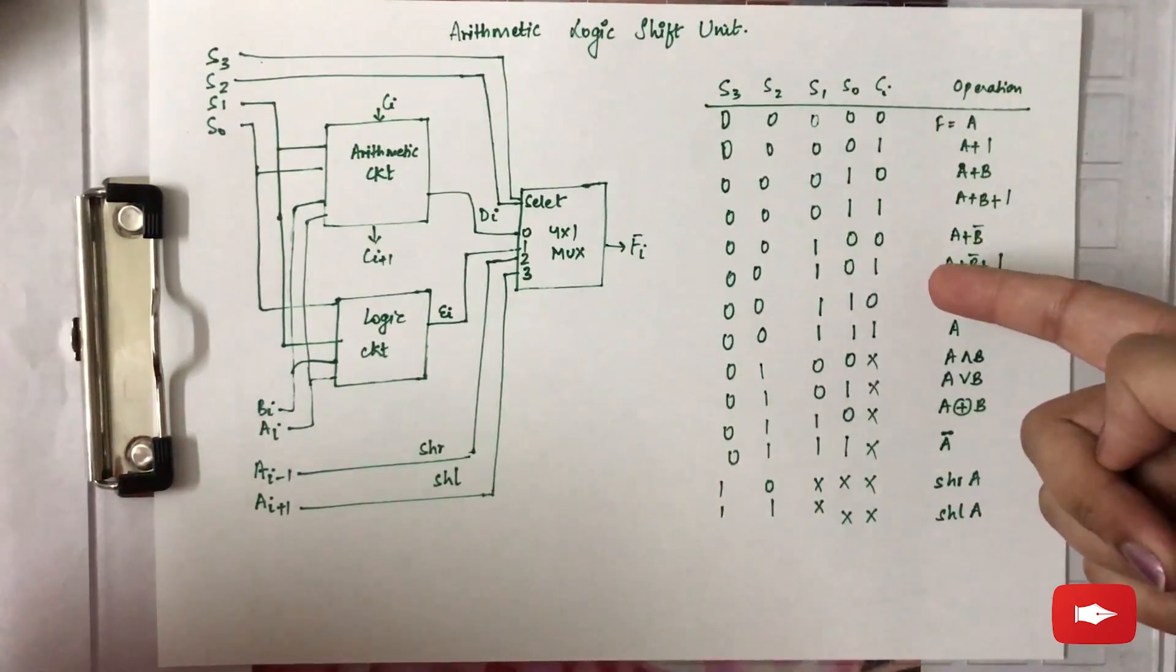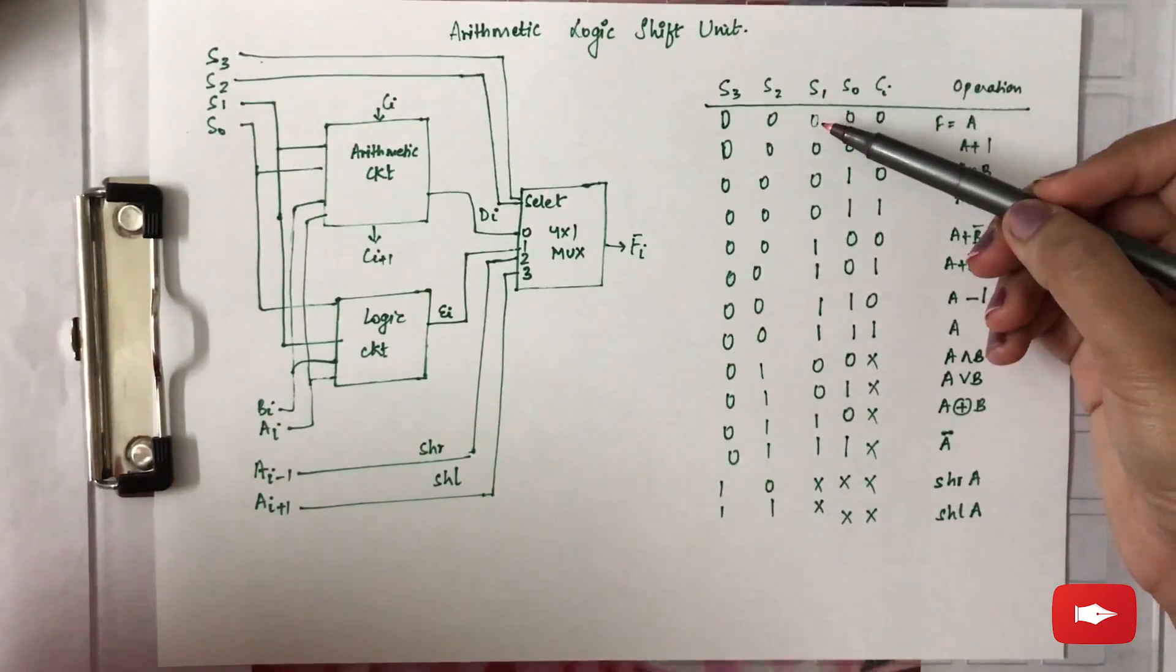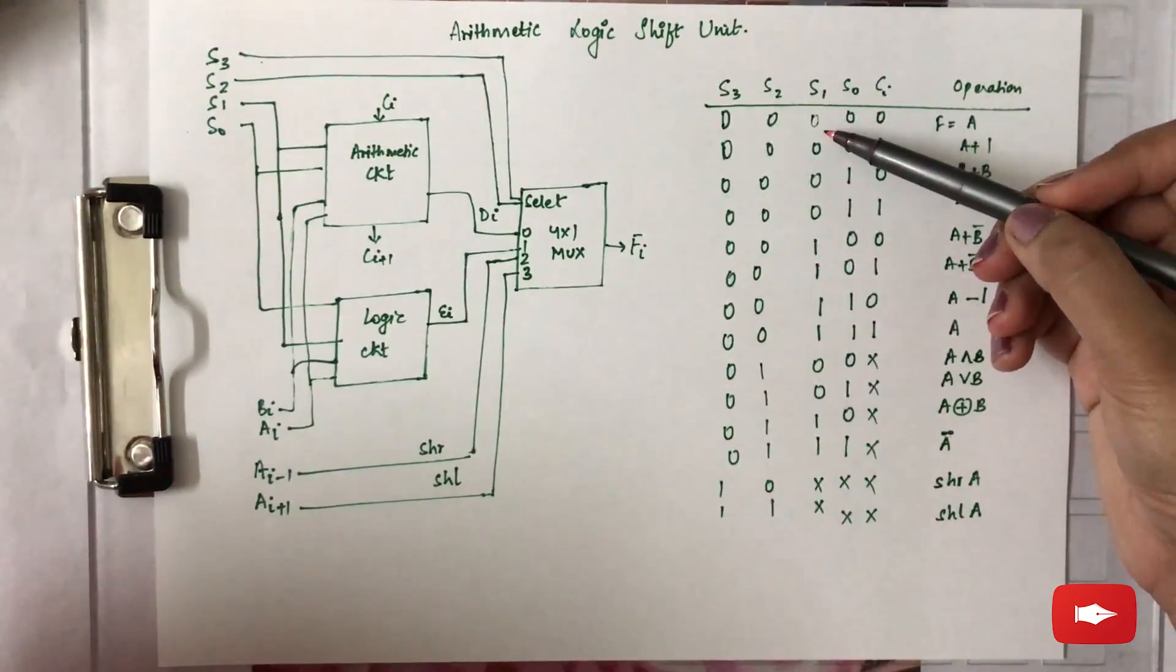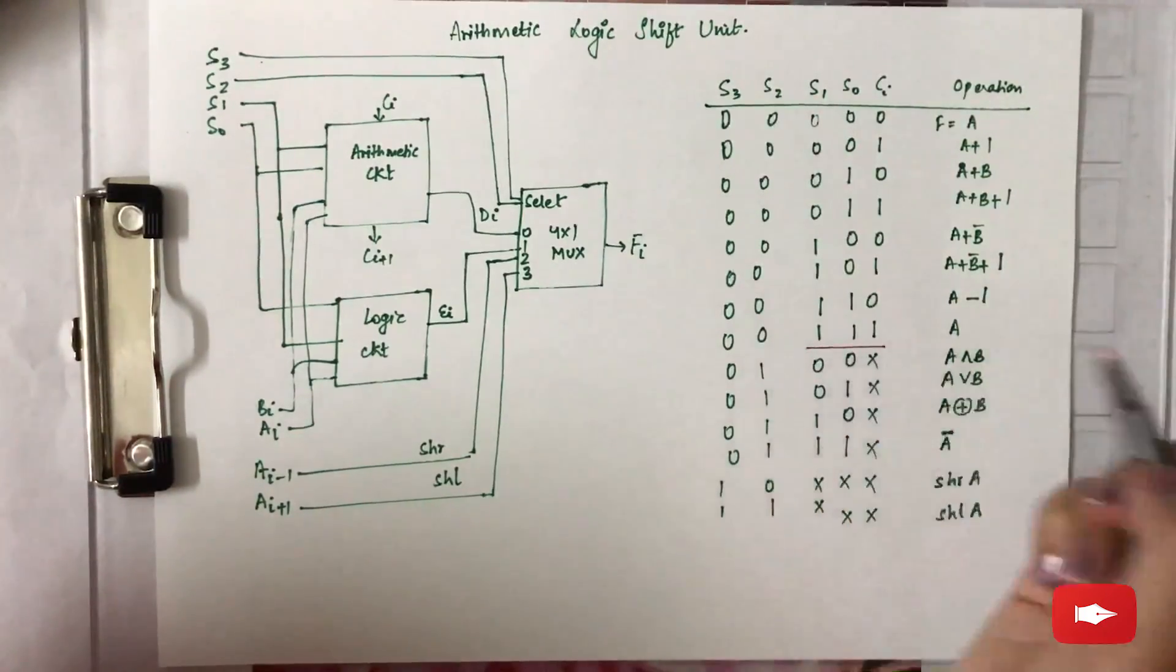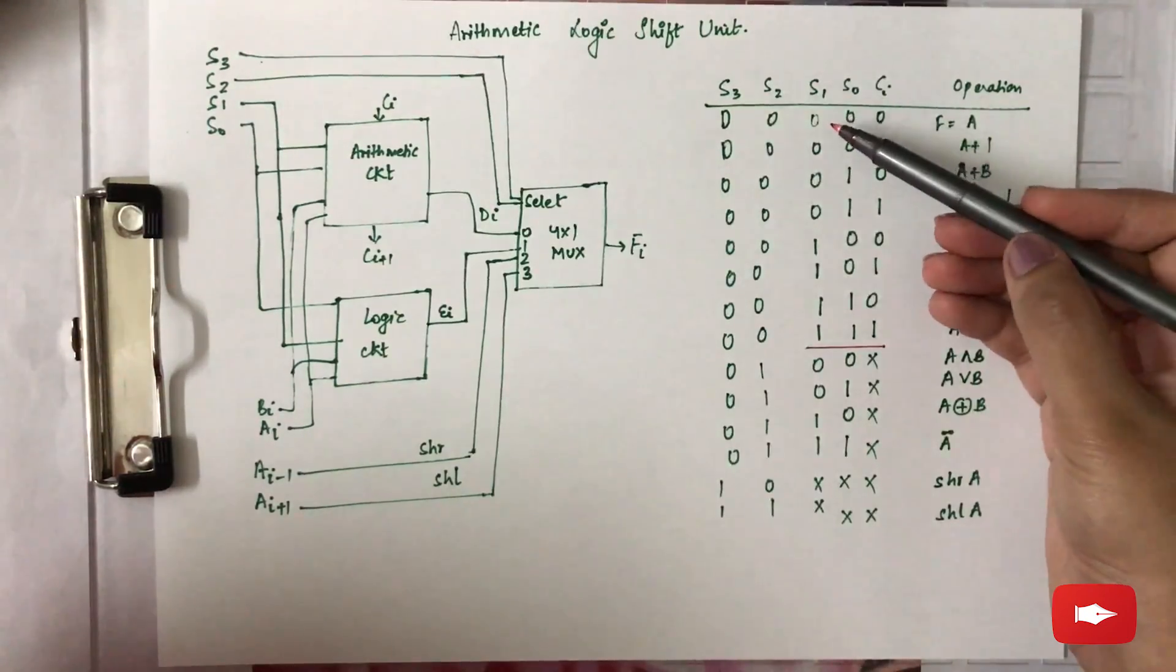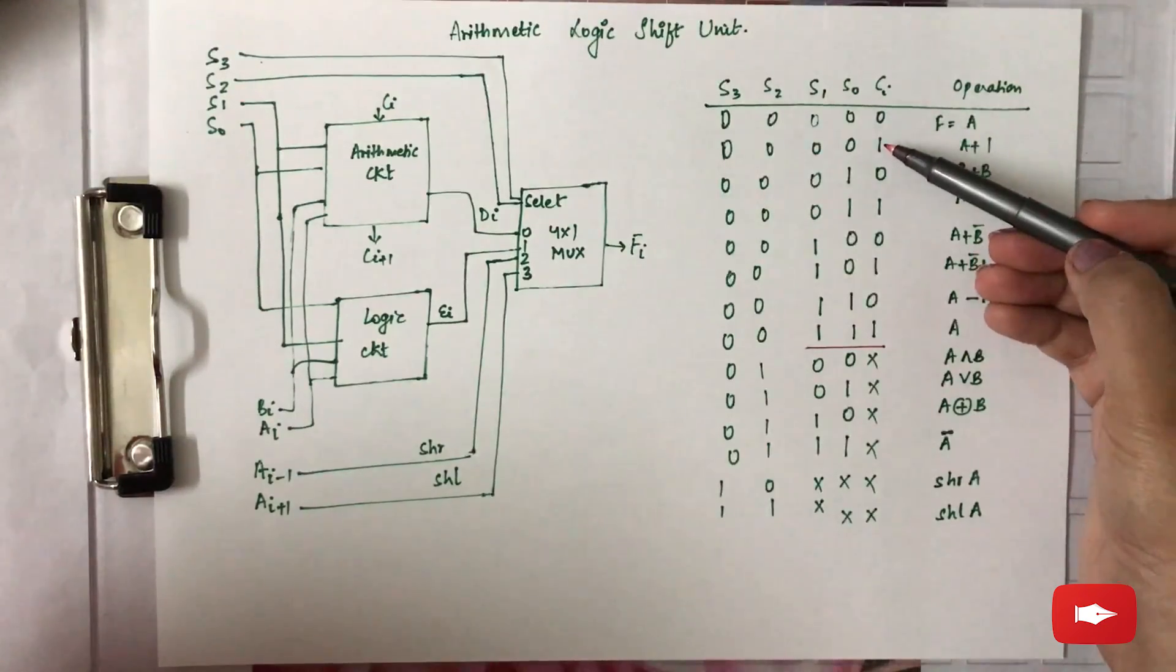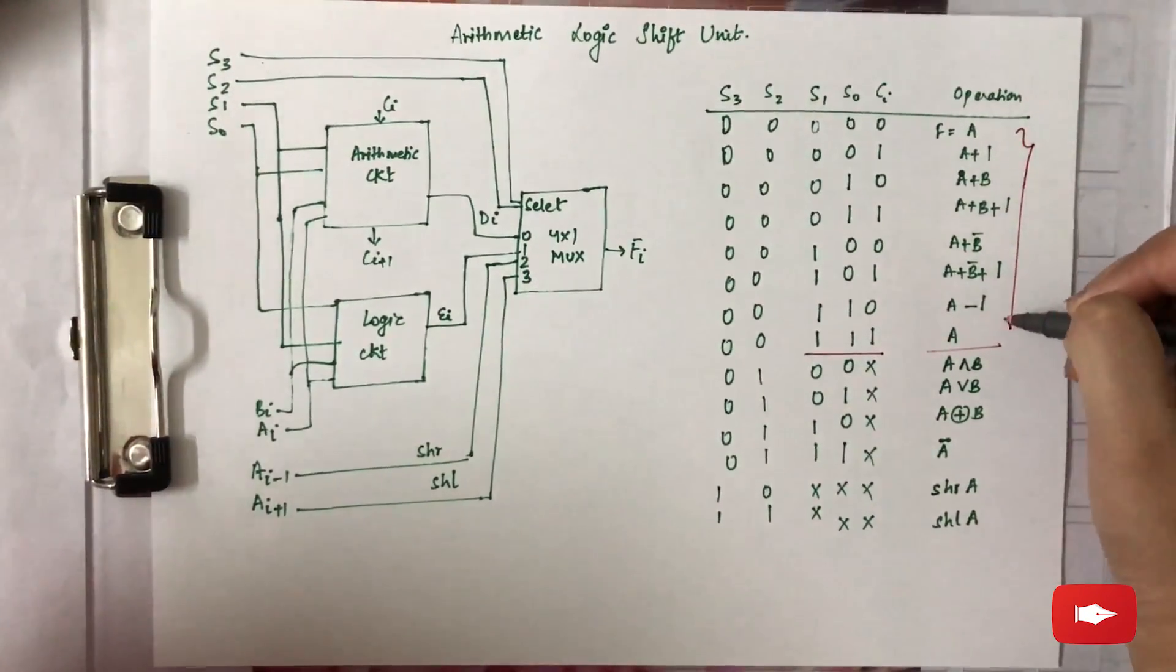Now as you can see here, this is the function table for the arithmetic logic shift unit. Now what we are doing here is, have a look at this table because s0 and s1 are deciding if it has to be arithmetic circuit or the logic circuit. For all the cases till here, you can see the carry input is either 0 or 1. For this case 0 0, the carry input can be either 0 or 1.